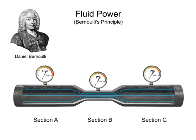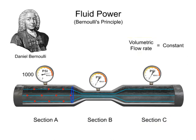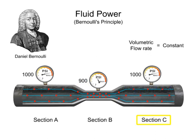Bernoulli's Principle states that an increase in the speed of an incompressible fluid occurs simultaneously with a decrease in pressure. This is illustrated by the flow of water through a pipe. The volume of water flow through all three sections is the same. When the water's flow is restricted in section B, the speed of the water increases to maintain the same amount of volumetric flow. This increase of speed simultaneously causes a decrease in pressure. When the flow of water reaches section C, the inverse occurs: the water flow decreases and the pressure increases.